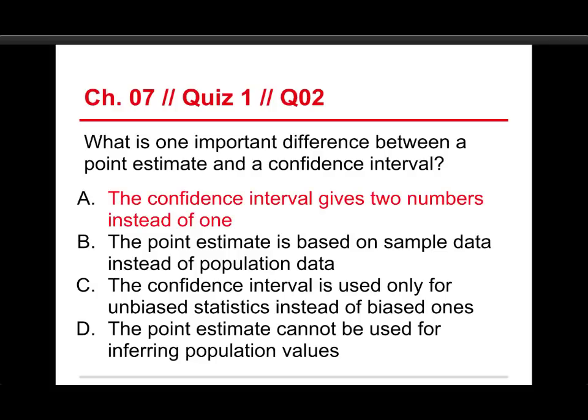The answer to this one is A, the confidence interval gives two numbers instead of one. I'll show you in a second. But let me address these other issues. The point estimate is based on sample data instead of population data. Well, they're both point estimates and confidence intervals are based on sample data. Now, it's true that we are using a population standard deviation in this particular version of the confidence interval, but it's an unusual thing, and it doesn't work into the point estimate at all. The confidence interval is used only for unbiased statistics instead of biased ones. Well, you want to have unbiased statistics, but the formula doesn't care what you're dealing with. It will use it either way.